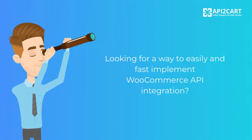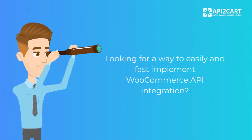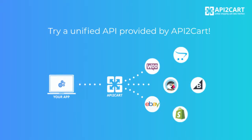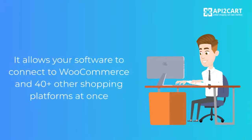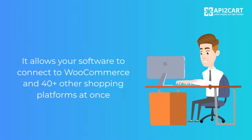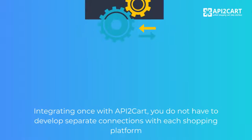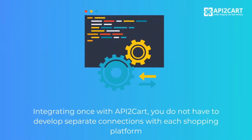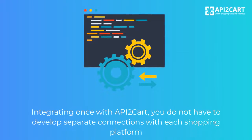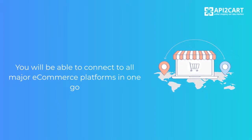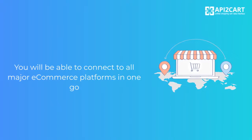Looking for a way to easily and fast implement WooCommerce API integration? Try a unified API provided by API2Cart. It allows your software to connect to WooCommerce and 40-plus other shopping platforms at once. Integrating once with API2Cart, you do not have to develop separate connections with each shopping platform. You will be able to connect to all major e-commerce platforms in one go.